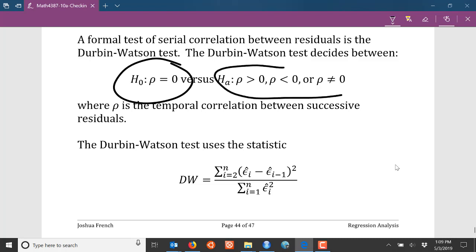versus some alternative, where it could be testing for positive autocorrelation, negative autocorrelation, or that there's just some autocorrelation regardless of the direction among our residuals.